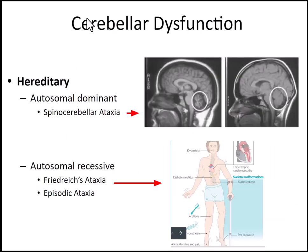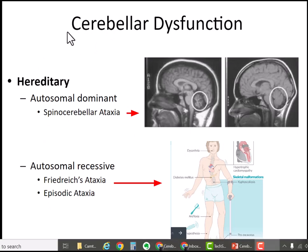Another way to get cerebellar dysfunction is through heredity. You can inherit spinocerebellar ataxia (SCA), and there are multiple types — importantly, SCA is inherited in an autosomal dominant fashion. The MRI on the right-hand side of the slide shows two images: one with a circle over a normal cerebellum, and the other showing the atrophied cerebellum of a person with spinocerebellar ataxia.